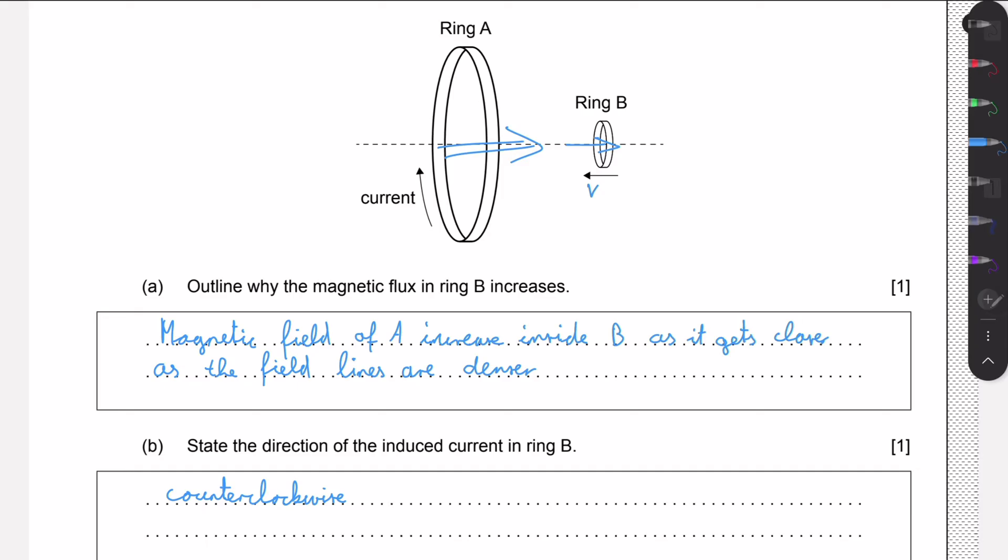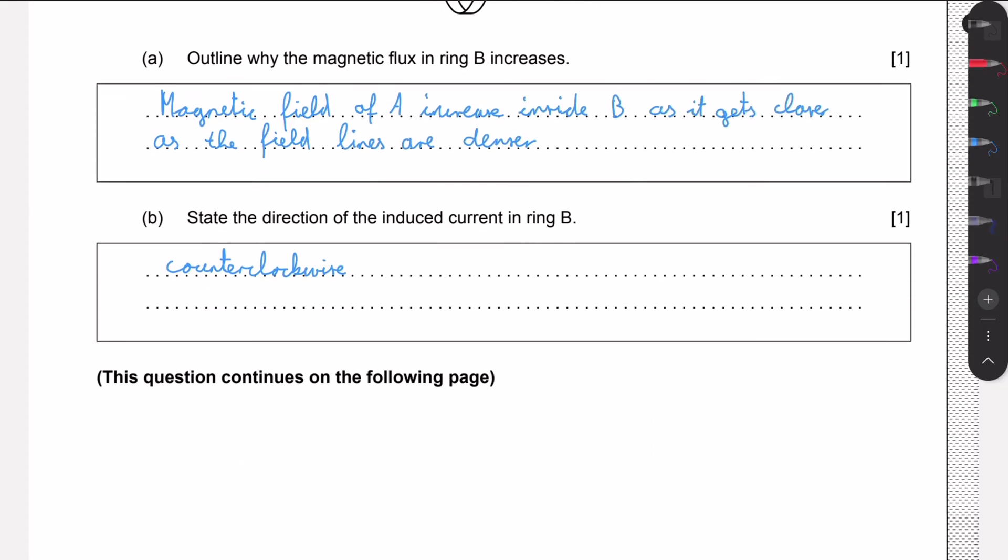So according to Lenz's law, the current in ring B wants to oppose this change. So what it will do is create a magnetic field pointing this way. And if you see which way the current must flow for such a magnetic field to be induced, you see that it will be counterclockwise. This is just simply Lenz's law - the field is increasing towards the right, so the ring wants to decrease the field towards the left to return to its original state.